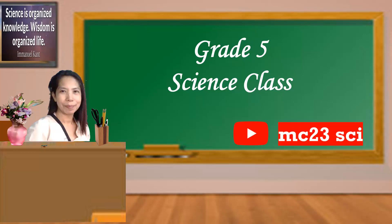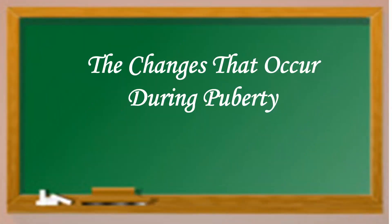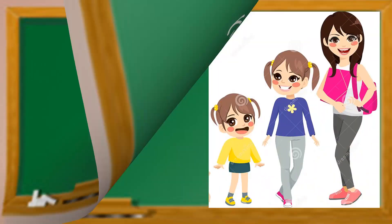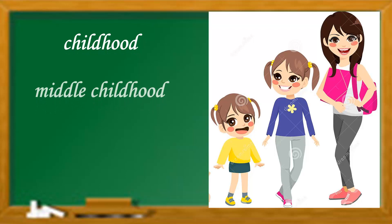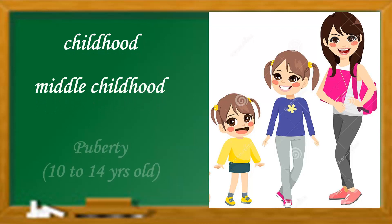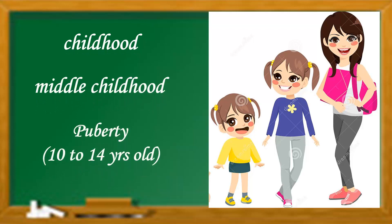Welcome to grade 5 science class. Today, we're going to discuss the changes that occurred during puberty. This shows the human development stage from childhood to middle childhood and puberty, at the age of 10 to 14 years old.